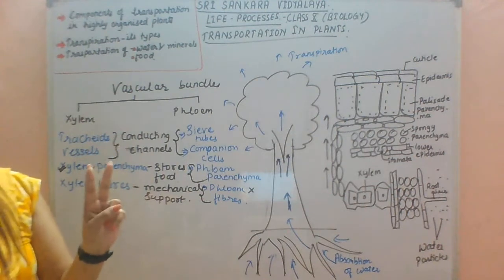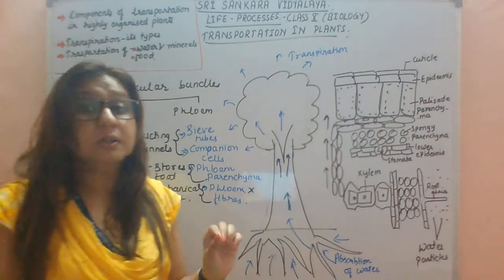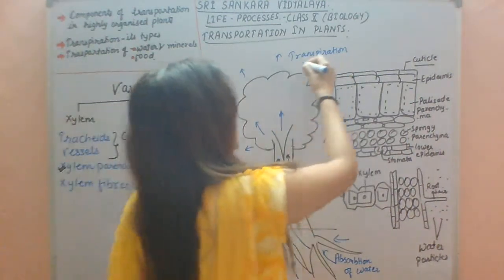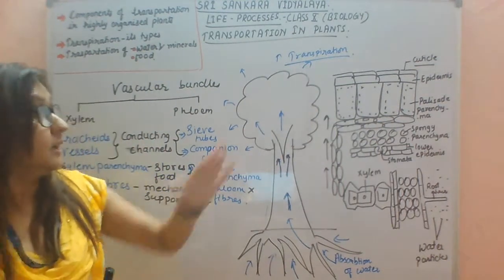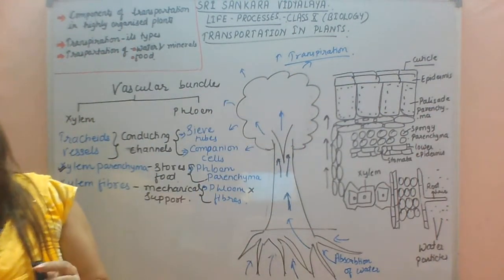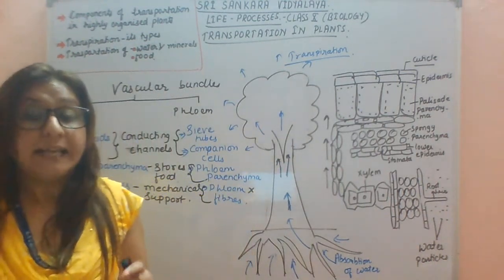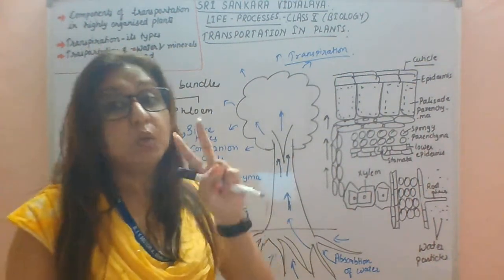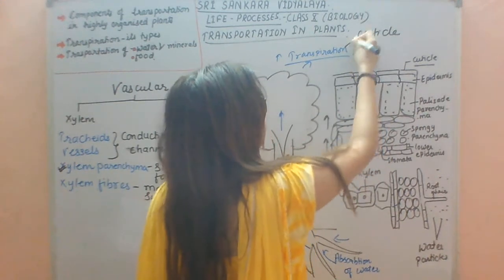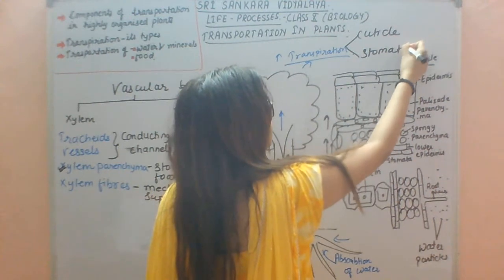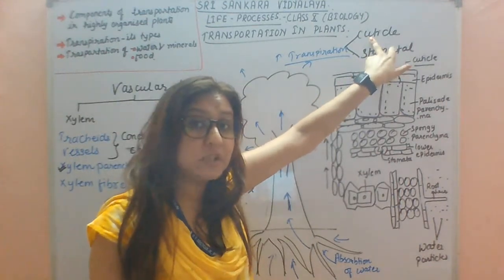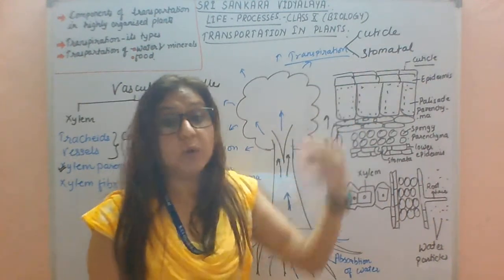There are two types of transpiration. First is cuticular transpiration, and second is stomatal transpiration. If the loss of water occurs through the cuticle, that is called cuticular transpiration. If the loss of water occurs through the stomata, that is called stomatal transpiration.